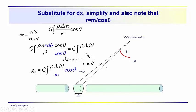Remember we're taking the vertical component. This is equal to the gravitational constant times the integral of A d-theta over r. Noting that r equals m over cosine of theta, we end up with the integral of rho times A times d-theta times cosine of theta over m.